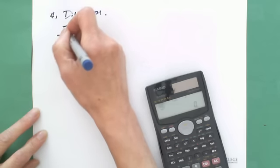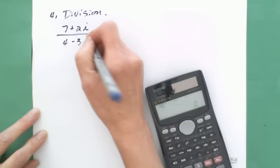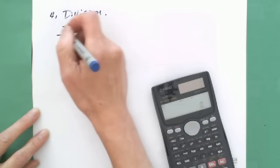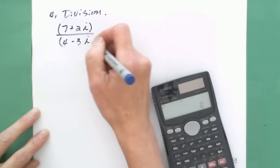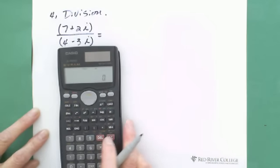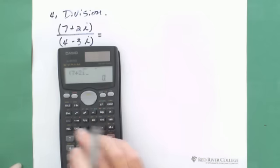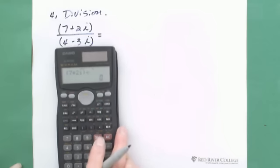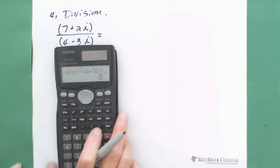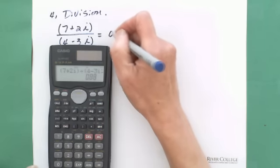So when you use the calculator, you need to put brackets. The top is 7 plus 2i divided by bracket 4 minus 3i. It equals 0.88.